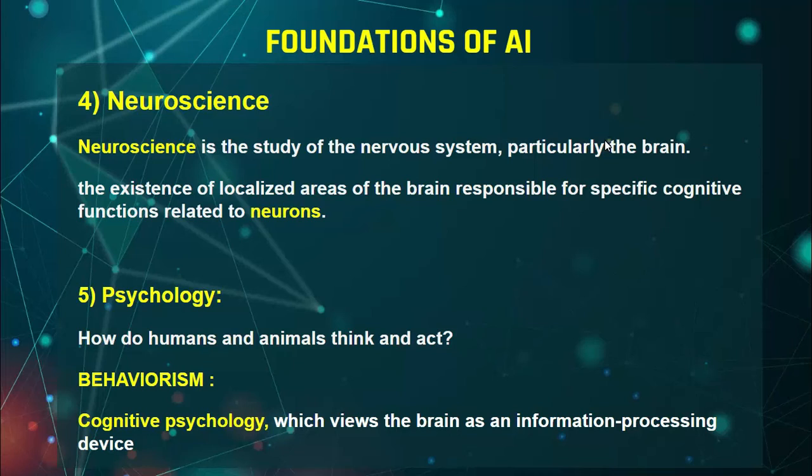The existence of localized areas of the brain responsible for specific cognitive functions is related to neurons. Neuroscience is important because of neurons — our body has many different neurons, and a particular action corresponds to a particular neuron. When a situation arises in the mind, specific neurons fire. This study is important for your artificial intelligence foundation.